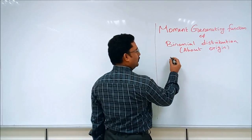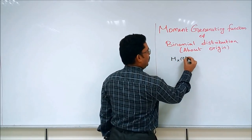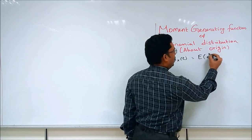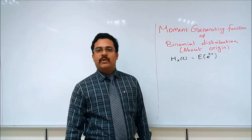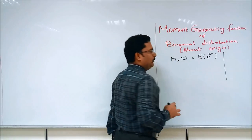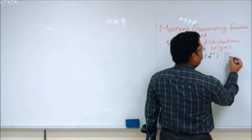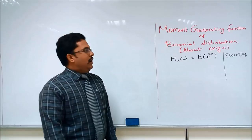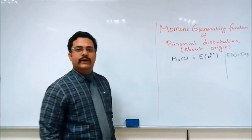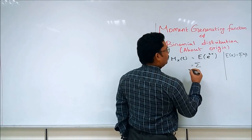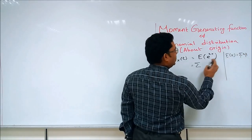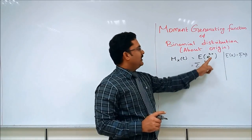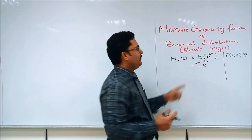Let us go for the rule of the Moment Generating Function: mx(t) is equal to E[e^(tx)], where x is a random variable. The rule for the expectation in probability is E[x] = summation of xi times pi. We use the same rule for E[e^(tx)], which is summation of e^(tx) times p(x), where capital X takes the values of small x.